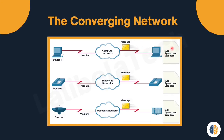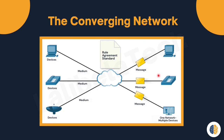Each network uses different technology to carry the communication signal and has its own rules, agreements, and standards. These separate networks could not communicate with each other, and maintaining this type of network is generally resource-consuming. The solution is the converged network. As shown in this picture, converged networks are capable of delivering data, voice, and video traffic between many different types of devices over the same infrastructure. It carries multiple services on a single network using the same set of rules, agreements, and implementation standards.